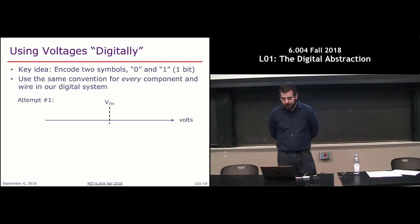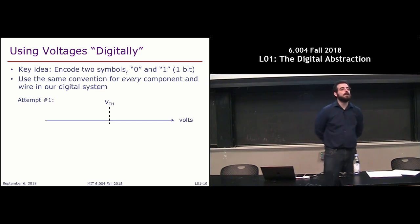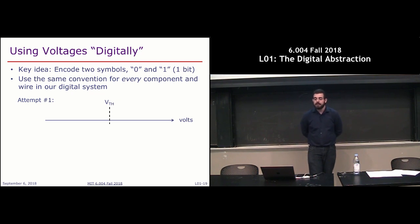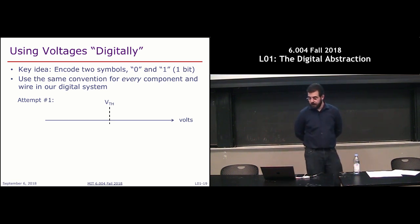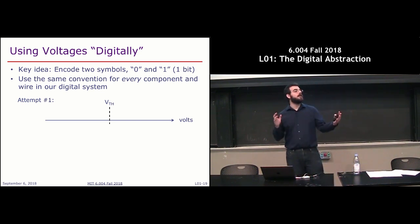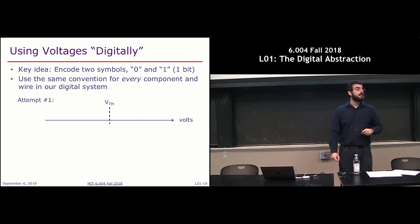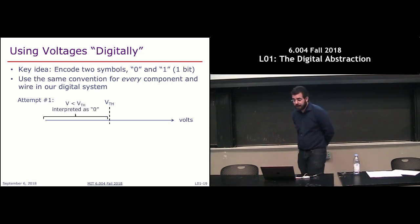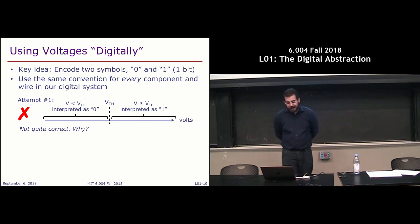We're going to have different attempts to encode voltages digitally. The key idea is to encode two symbols — zero and one — using ranges of voltage, with every component and wire following the same convention. Say we have voltage between zero and five volts. We could start by picking a threshold voltage in the middle and say everything lower is a digital zero and everything higher is a digital one. This looks reasonable — we have our ranges. Unfortunately, this doesn't work.